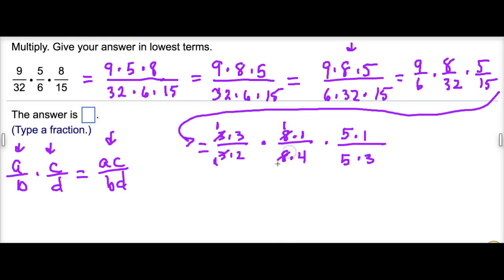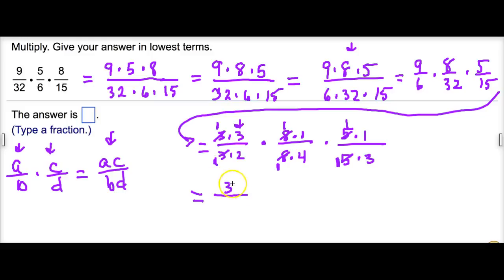And five over 15: five is five times one, and 15 is five times three. Anywhere we have a common factor in numerator and denominator it reduces to one. Three over three reduces to one, eight over eight reduces to one, and five over five reduces to one. What remains in the numerator is one times three times one times one, which gives us three. In the denominator we have two times one times four times one times three, giving us 24.